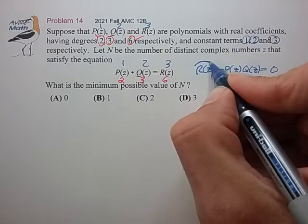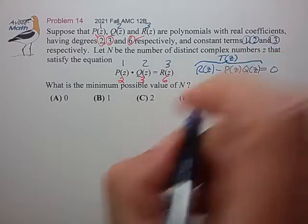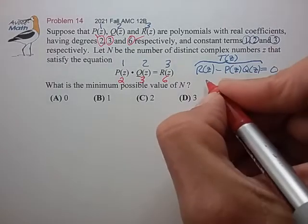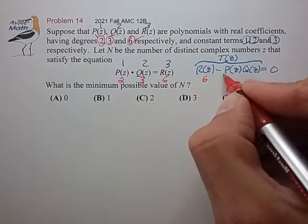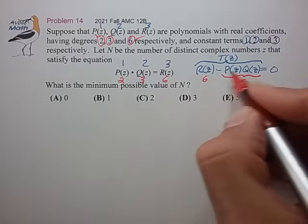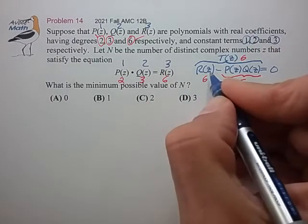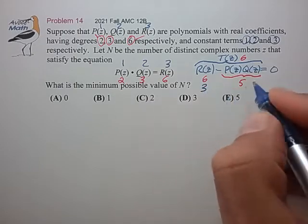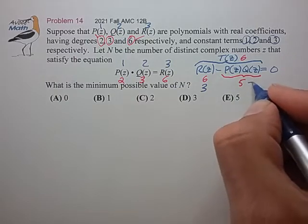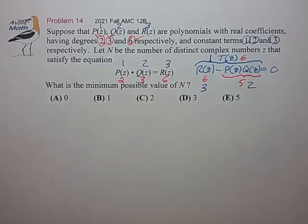So this would be a polynomial that I'll call T(z). And again, R(z) has degree 6, the product of these two will have degree 5, the difference will have degree 6. The constant term for R(z) is 3, the constant term for this product would be 1 times 2 is 2, the difference would give a constant term of 1 for T(z).